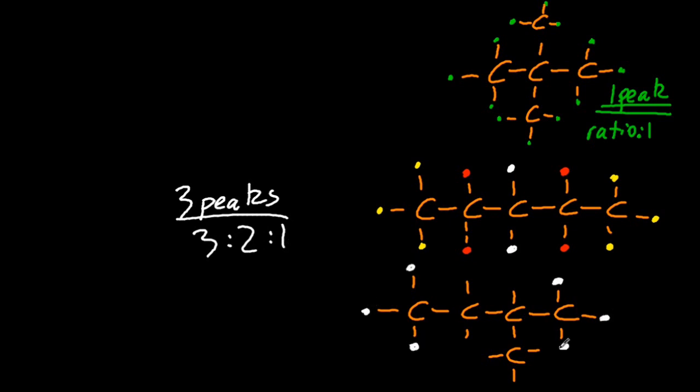And finally, are those three white ones the same as the other three white ones? No. One's near a methyl, one's further from the methyl. That doesn't count. So there are four hydrogen environments for the final isomer, so four peaks, and the ratio underneath is 6 to 3 to 2 to 1.